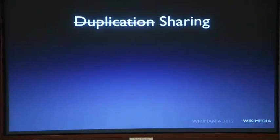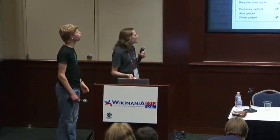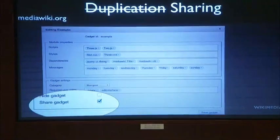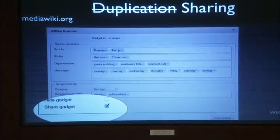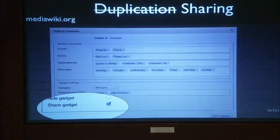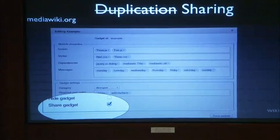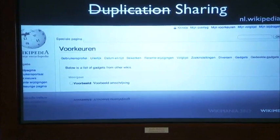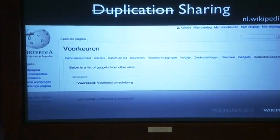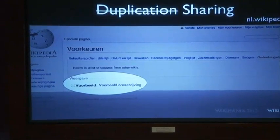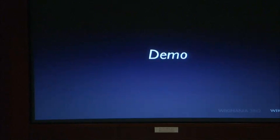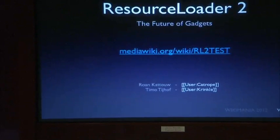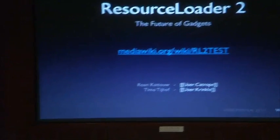The duplication problem is also solved - we're now sharing through the cross-wiki loading principle of Resource Loader. Instead of exporting, importing, copying, pasting. The editor has a 'share gadget' checkbox. Once enabled, it makes this gadget available as a repository inside this wiki on any other wiki that uses the origin wiki as a repository. We're running short on time so we won't do a demo, but I'll point to where more information can be found on the current progress and the demo we have so far.